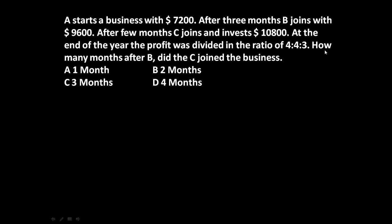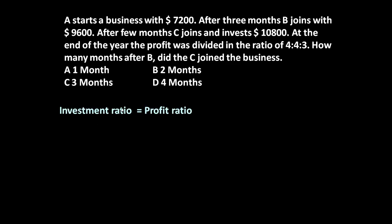The question is: how many months after B did C join the business? So, A starts the business with $7200, after three months B joins with $9600, after few months C also joins and invests $10800, and at the end of the year the profit was divided in the ratio 4:4:3. For answering such questions, one thing we should always keep in mind: profit ratio is equal to investment ratio.